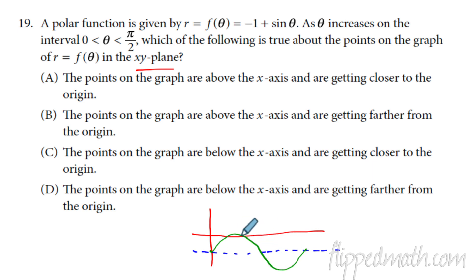There should not pass it, but this is all the way to two pi right here. But we want to know between zero and pi over two, which is this part right here. All right, what's happening? The points on the graph are above the x-axis. That's not true. So those two are wrong. And they're either getting, they're definitely below the x-axis, right? And they're getting closer to the origin or the points on the graph are below the x-axis and getting farther away from the origin.